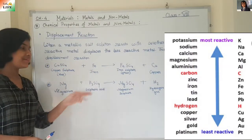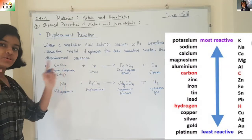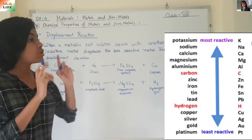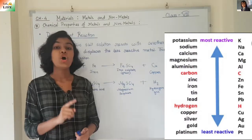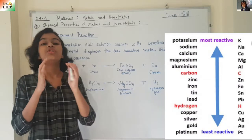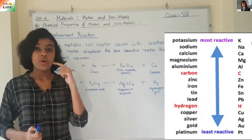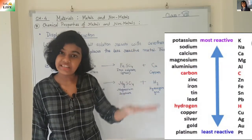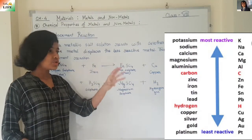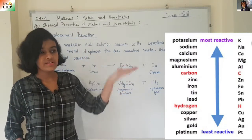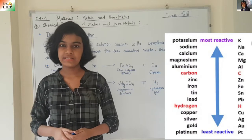In our example, copper sulphate plus iron gives iron sulphate plus copper. There are two metals: copper and iron. If you look at the activity series carefully, iron is placed above hydrogen, while copper is present below hydrogen. So iron is above copper in the activity series. Since reactivity decreases going downward, iron is the more reactive metal and copper is the less reactive metal.